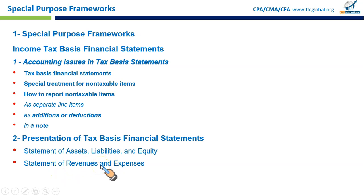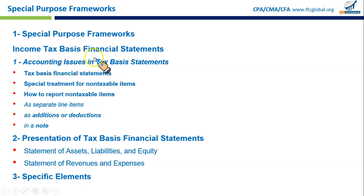The Statement of Revenue and Expenses — equivalent to an income statement — shows the company's revenues and expenses according to the tax basis, not accrual accounting. For example, a retail store might report sales and business expenses like rent and salaries based on what is shown on the tax return. Any income or deductions included in the tax return must also be reflected in the financial statement, since these statements are prepared per tax rules.